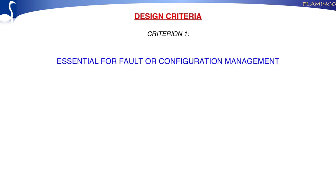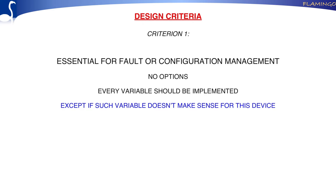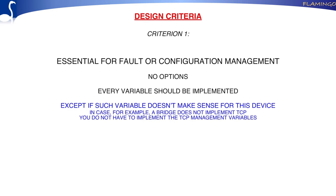Let's first look at the design criteria behind the MIB-2 — that makes it clear why certain things are not there. First, only things that were essential for fault or configuration management were included. The term 'essential' means there are no options, so you have to implement everything — except when you have a bridge that doesn't have TCP, you do not have to implement those variables. But if you support a protocol, you should implement all the management variables for it.